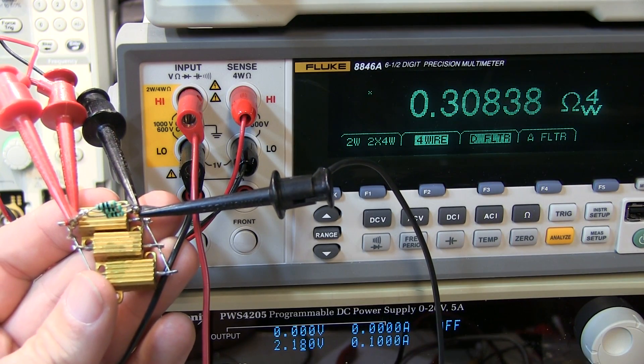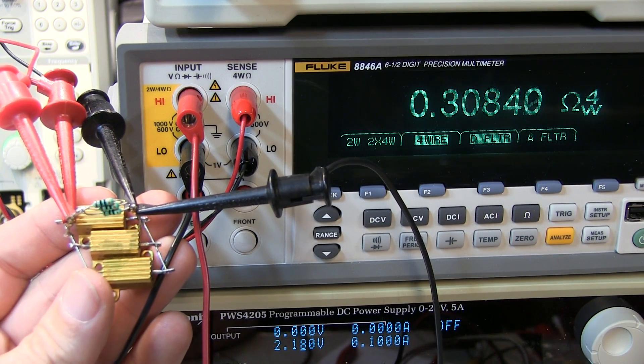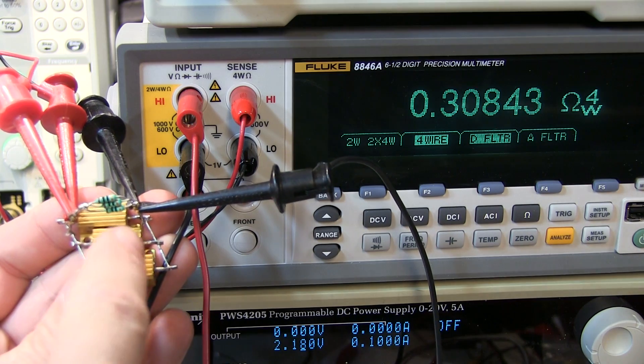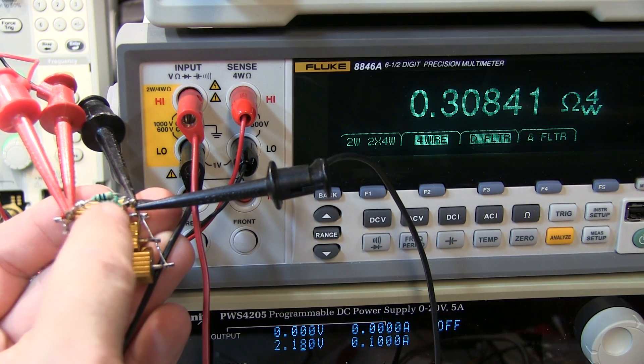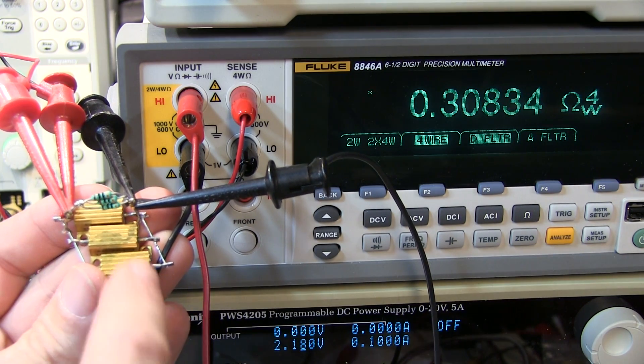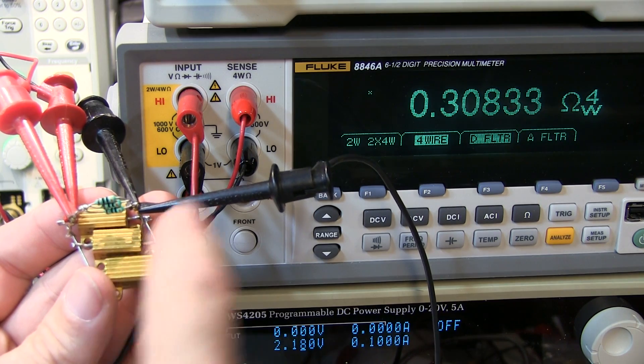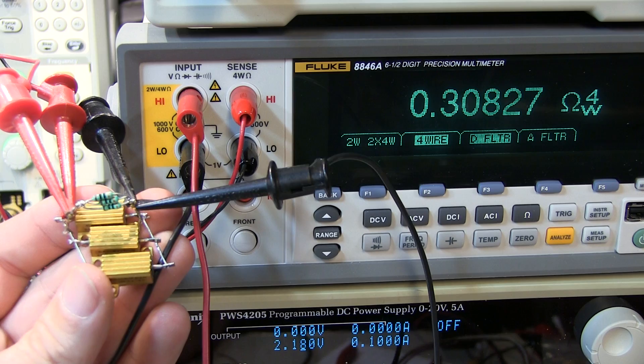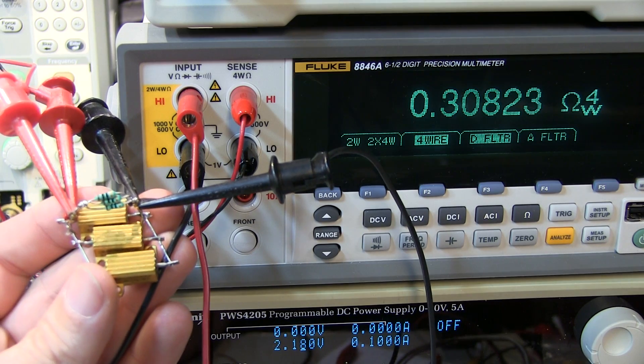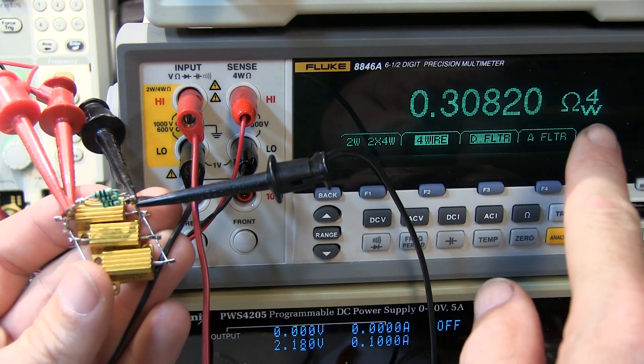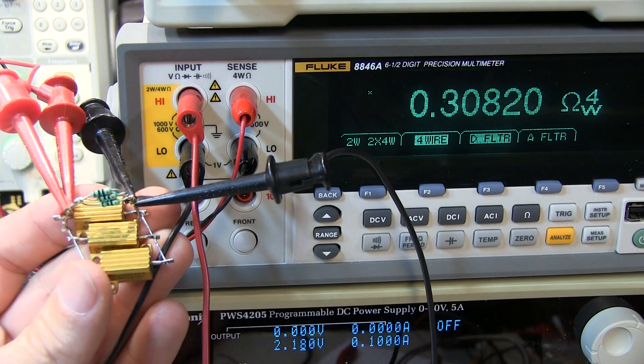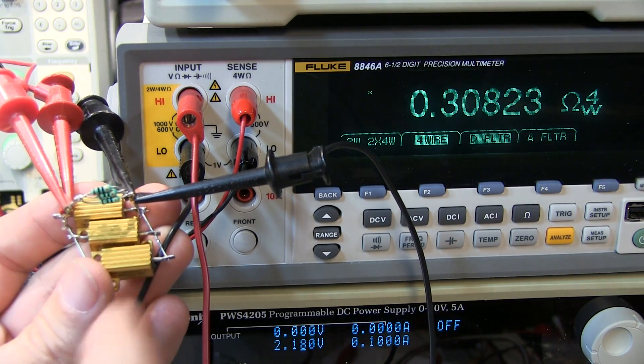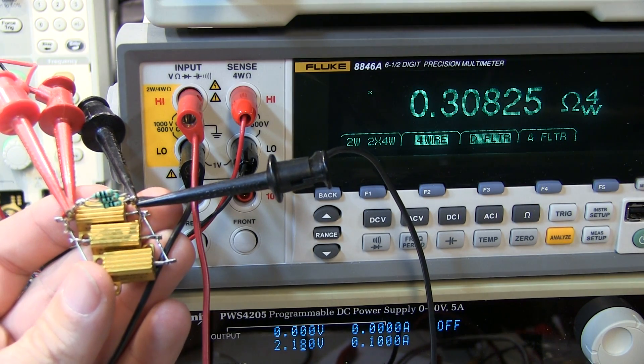Now my selection of low value resistors in my junk box is pretty abysmal. So I had to cobble together a couple of power resistors and some smaller quarter watt resistors here, in parallel to essentially reach my desired 308 milliohms shunt resistor value. Now you'll notice I'm using the four wire resistance measurement. It gives you the most accuracy, especially when measuring low values like the shunt resistor.